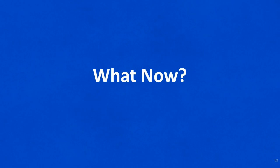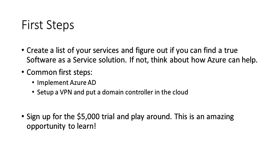Let's talk about what to actually do if you're interested in Azure. Start by creating a list of your services — anything you're running on-premise. Then map that list against what's out there: Azure Active Directory, Azure Infrastructure as a Service, etc. But first try to find out-of-the-box tools. If you have an Access database tracking donors, look at a cloud-based donor management system before going to Azure. The first step many organizations will take is implementing Azure AD and setting up a VPN. Then sign up for the $5,000 trial and play around — this is a great opportunity to try things without needing board approval for a major expense.